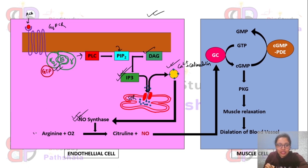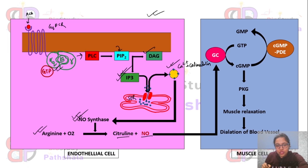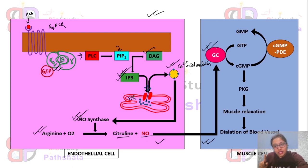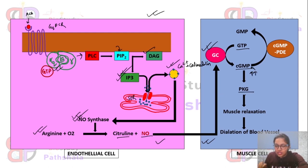The calcium-calmodulin complex activates nitric oxide synthase — the NO synthesis enzyme. This enzyme catalyzes the reaction where arginine reacts with oxygen to produce citrulline and nitric oxide. The nitric oxide then diffuses from the endothelial cell into the smooth muscle cell, where it activates guanylyl cyclase. The activated guanylyl cyclase produces cyclic GMP from GTP. The high amount of cyclic GMP then activates PKG — protein kinase G.